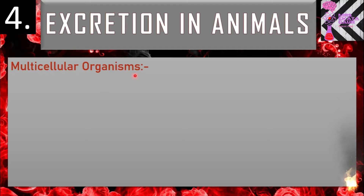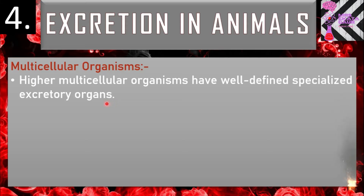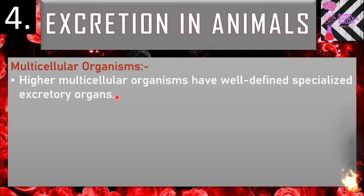In multicellular organisms, higher multicellular organisms have well-defined specialized excretory organs. Just like higher category animals, all of them have confirmed excretory organs. As you may remember from the diversity chapter in Class 9, excretory organs have been developed, and in more developed organisms only specialized excretory organs exist. This is why we call them well-defined specialized excretory organs.